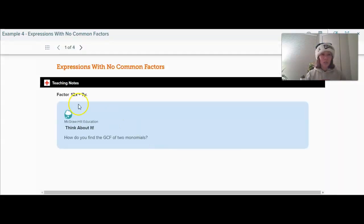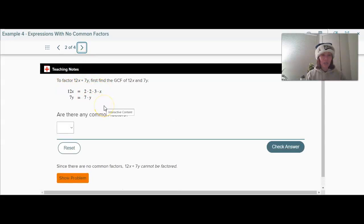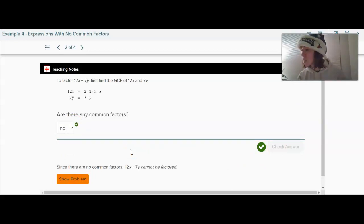So if you look, 12X plus 7Y, if I were to take the prime factorization of each of those, 12 is 2 times 2 times 3 times X, 7Y is 7 times Y. And there are no common factors here. So if there are no common factors, we say that it cannot be factored. So you wouldn't be able to do anything or simplify this in any way. You would just say it cannot be factored.